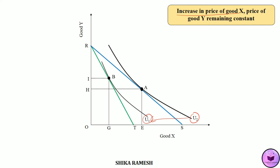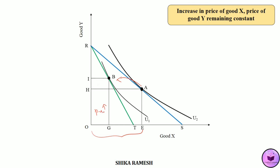In the new budget line RT, the consumer reaches equilibrium at point B where the consumer is purchasing OG amount of good X and OI amount of good Y. The movement from A to B shows the price effect. Initially the consumer was purchasing OE amount of good X, but due to the increase in the price of good X, the price of good Y remaining the same, the consumer has decreased his demand for good X.